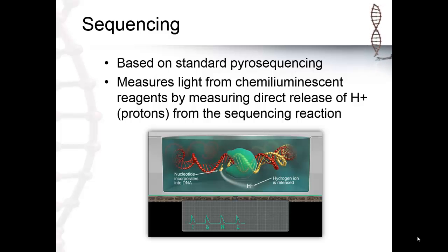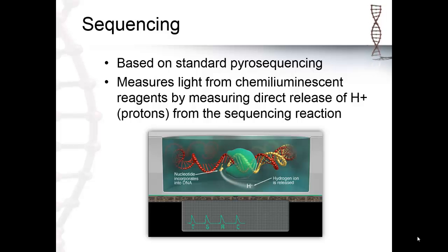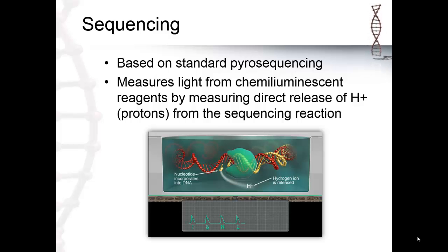What really differentiates Ion Torrent's system is the sequencing technology. It is based on standard pyrosequencing chemistry, a form of sequencing by synthesis, whereby individual bases are introduced one at a time and incorporated by DNA polymerase. However, unlike other platforms, rather than measuring light released from luminescence reagents, the Ion Torrent system measures the direct release of the proton, or hydrogen atom, from the reaction.